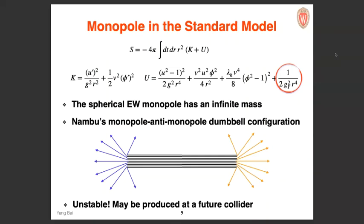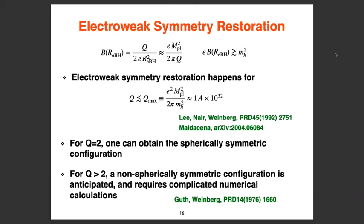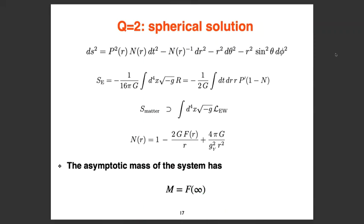Question: why did you require non-spherical configurations for large magnetic charge? Answer: there is a paper by Guth, Erick Weinberg, and colleagues providing a proof that you cannot have a spherical configuration when the magnetic charge is greater than two. For black holes the non-spherical constraint may be relaxed — that is why the case studied here is tractable.